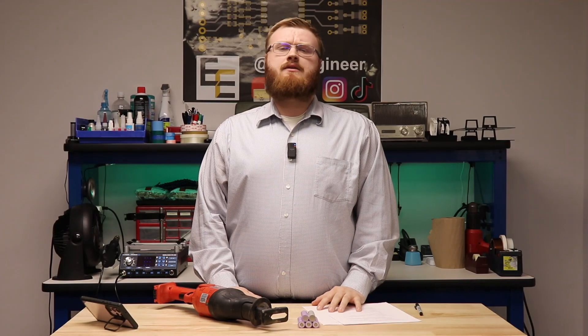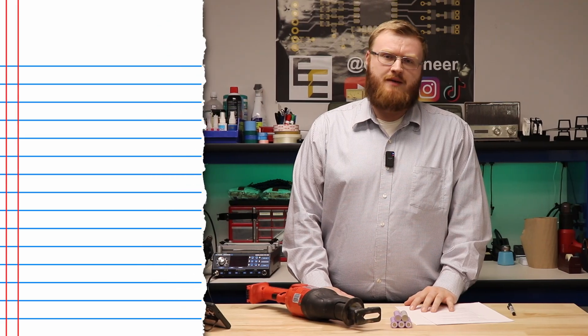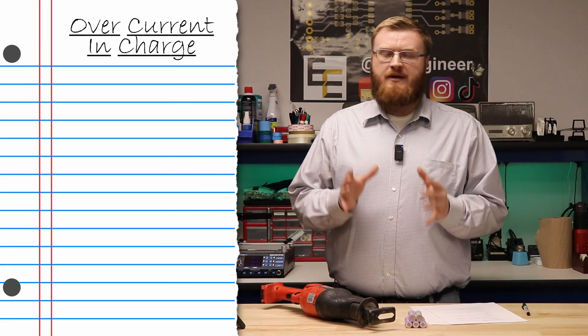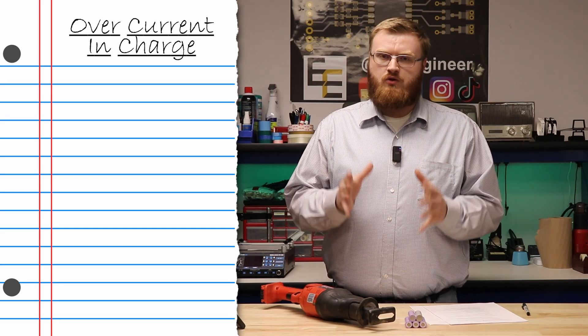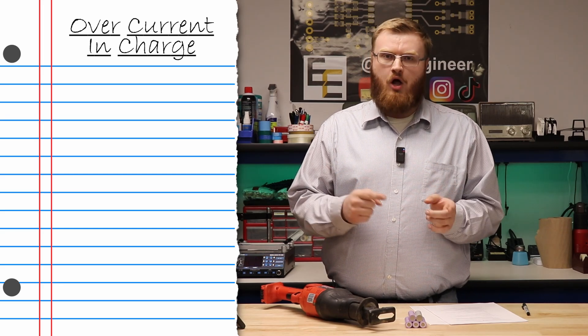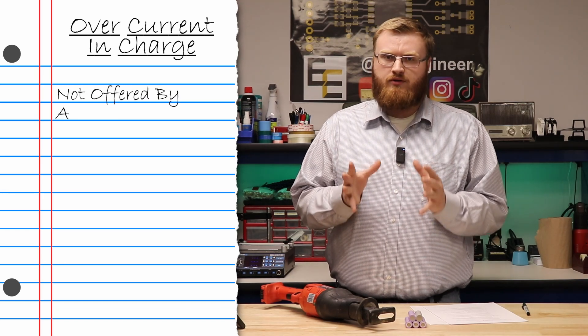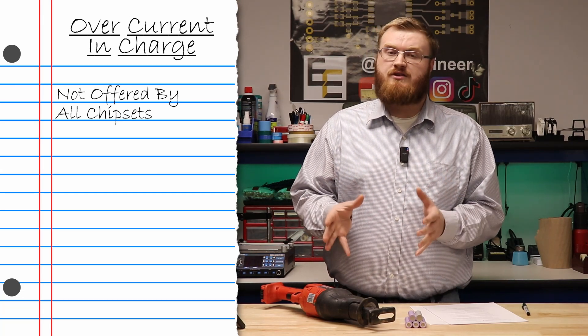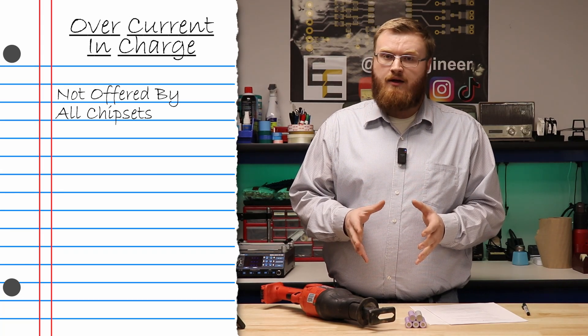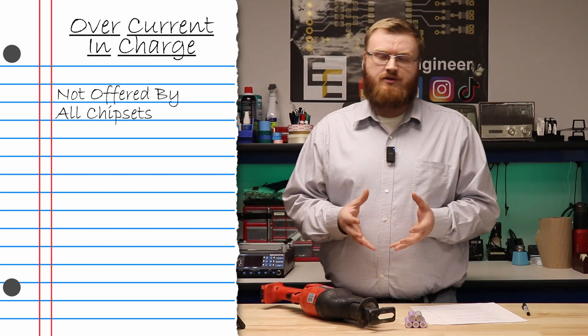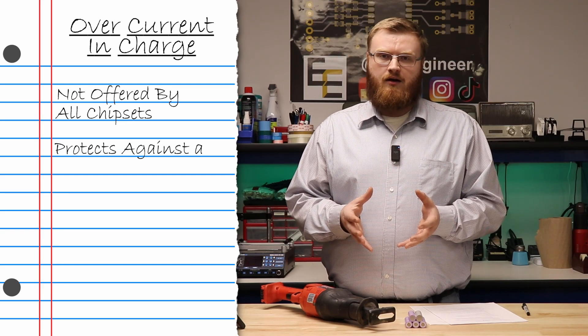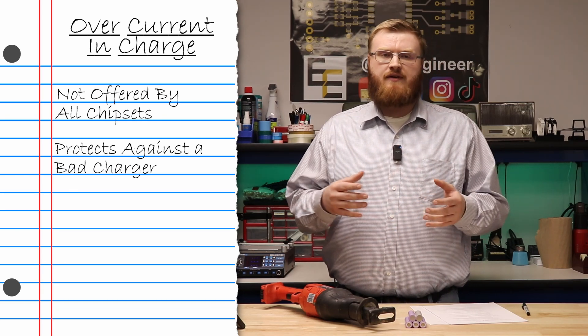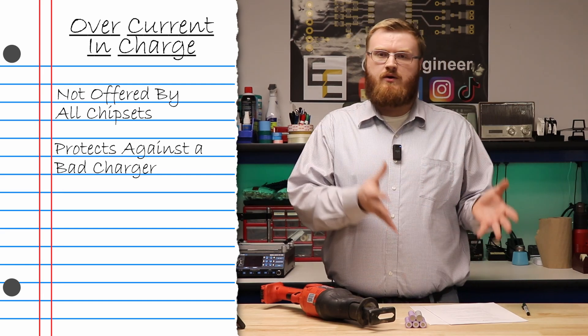The second feature to look for is overcurrent in charge. This is important because some battery protectors do not offer protection with current flowing both ways. You want overcurrent in discharge and overcurrent in charge - current going both directions into your battery pack. The problem is if you have a rogue charger that is outputting way more voltage and way more current than it needs to, instead of having a current limit of three amps which is what your cell can take.